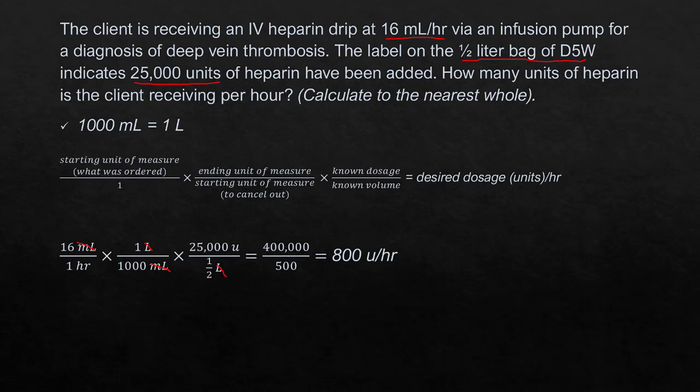So we can go ahead and multiply across. 16 times 1 times 25,000 is 400,000. 1 times 1,000 times one-half is 500. 400,000 divided by 500 is 800. Our answer is 800 units an hour. On to the next question.